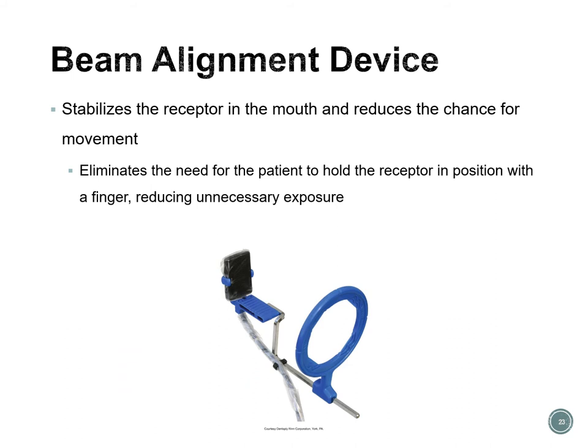A beam alignment device stabilizes the receptor in the mouth and reduces the chance for movement. It also tells the radiographer where to place the PID properly in order to take the best diagnostic image. Film holding devices assist the operator in properly positioning the film and the PID, thus reducing the number of unnecessary retakes.